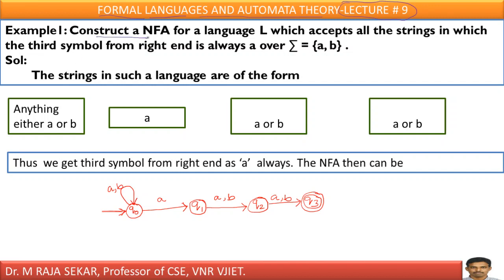Construct a NFA for language capital L, which accepts all the strings in which the third symbol from the right end is always A, over sigma equal to {A, B}. From the right end, this is the first position, this is the second position, this is the third position. The third position must always be A — that's what it says.